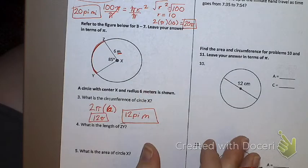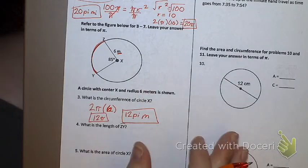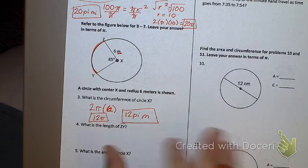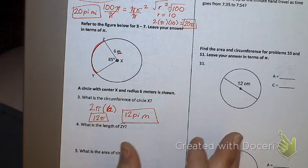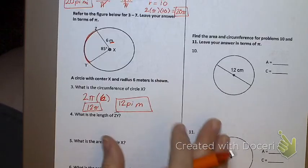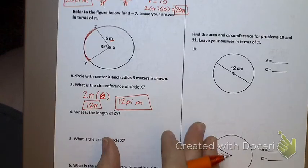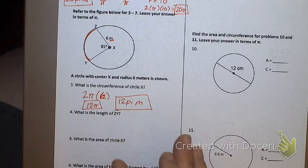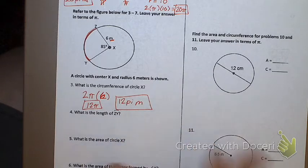So 12 pi is 37.7, but you're not going to want any decimals — 12 pi. All of them say leave in terms of pi. I think there might be one question that says round to the nearest tenth — I think it's the clock problem — but the rest of them are all in terms of pi.